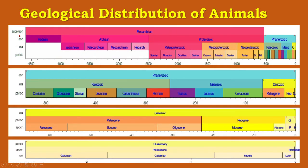Here you can see that the super eon is the Pre-Cambrian, then the eons are Hadean, Archean and Proterozoic. The Archean is subdivided into Eoarchean, Paleoarchean, Mesoarchean and Neoarchean. The Proterozoic is divided into Paleo-Proterozoic, Meso-Proterozoic and Neo-Proterozoic. The Phanerozoic is divided into Paleozoic, Mesozoic and Cenozoic. These are the divisions of the geological time scale.